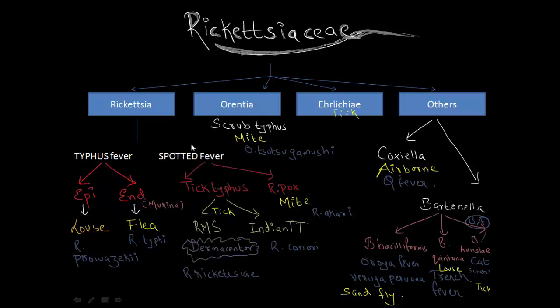Here is the actual classification of Rickettsia. Make sure you watch the previous video where we discussed the mnemonics to remember the classification. The Rickettsia family is mainly divided into the following genera: Rickettsia, Varantia, Arlichia, and from the others you have Coxella and Bartonella.